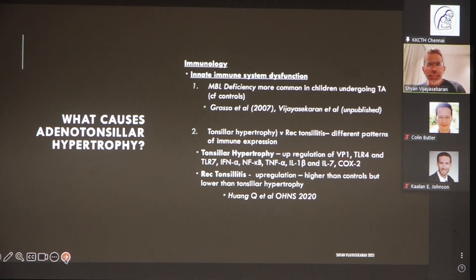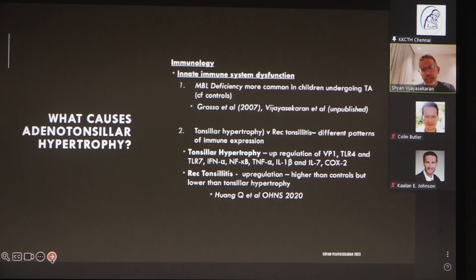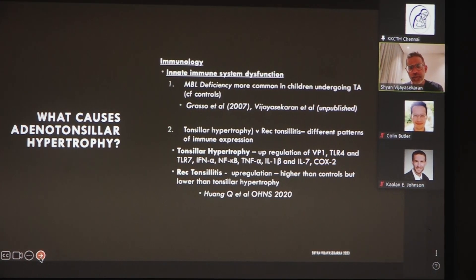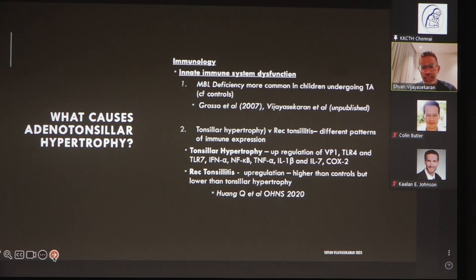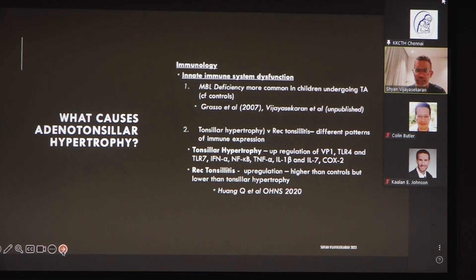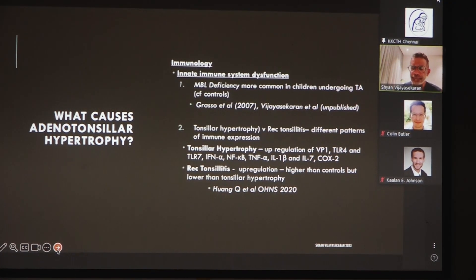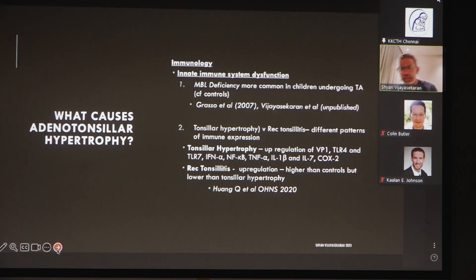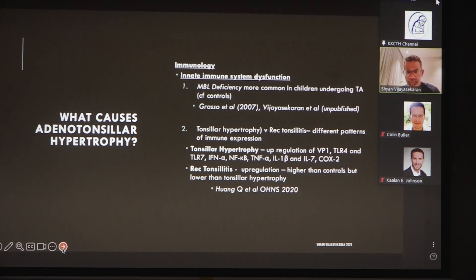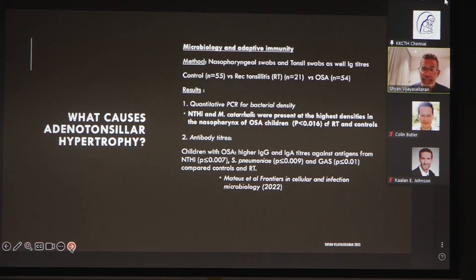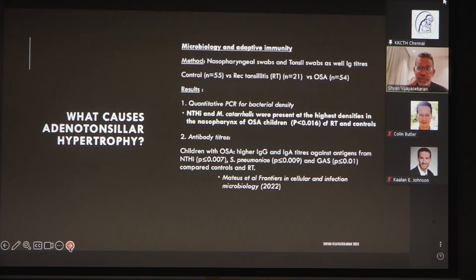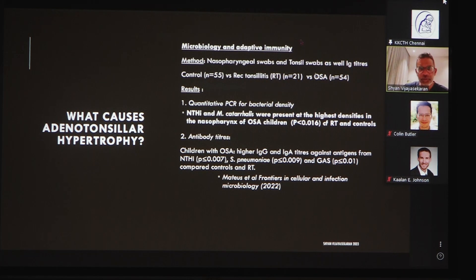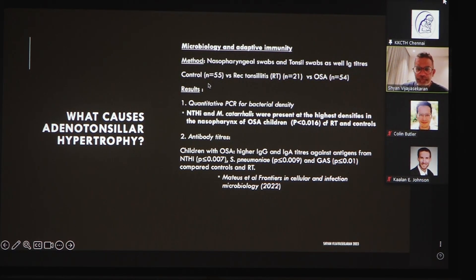Why do we have adenotonsillar hypertrophy? It's probably related to the immune system. In children who suffer from adenotonsillar hypertrophy, they are more likely to be mannose-binding lectin deficient — that's an innate immune system molecule. A study by Huang et al. from 2020 showed that children with tonsil hypertrophy had upregulation of many innate immune system molecules, including Toll-like receptor 4, interleukin-1 alpha, interleukin-1 beta, and interleukin-7.